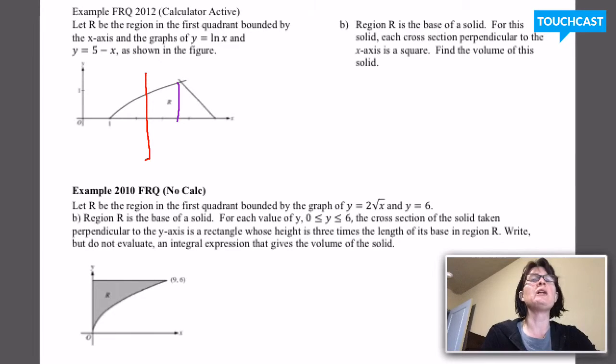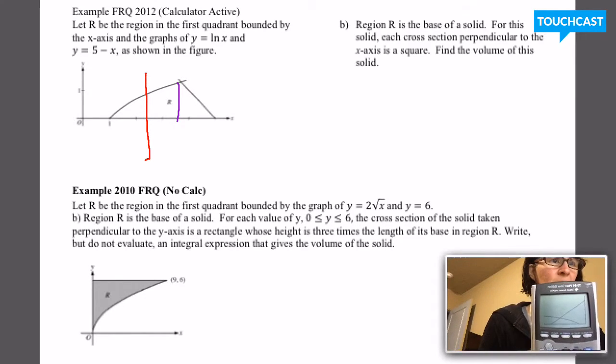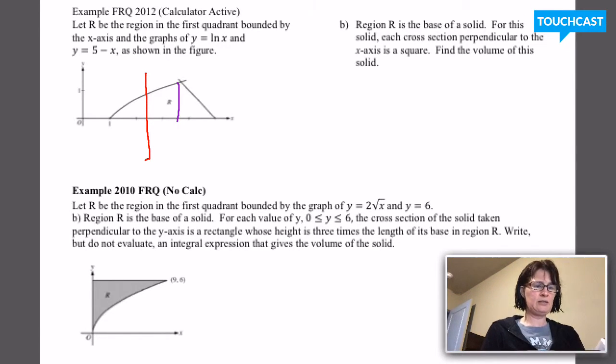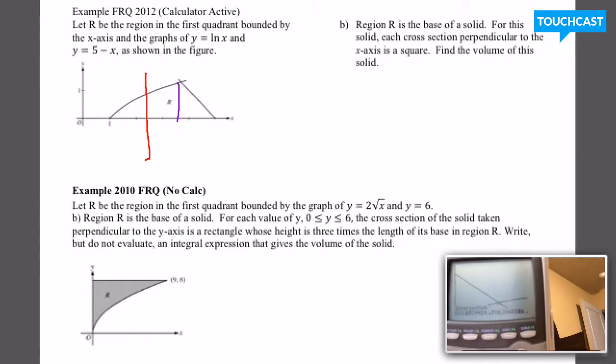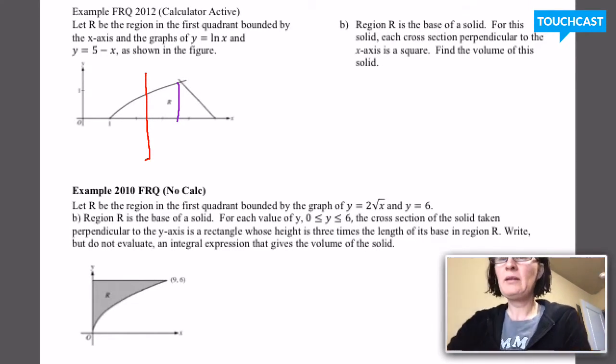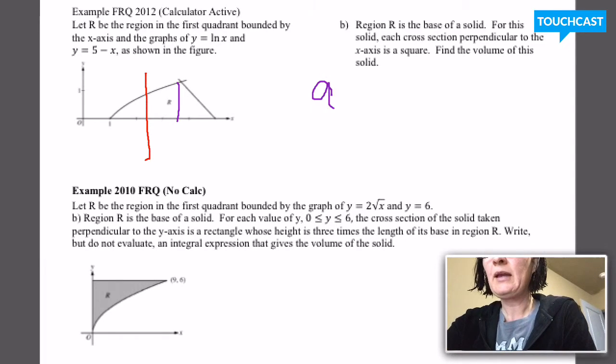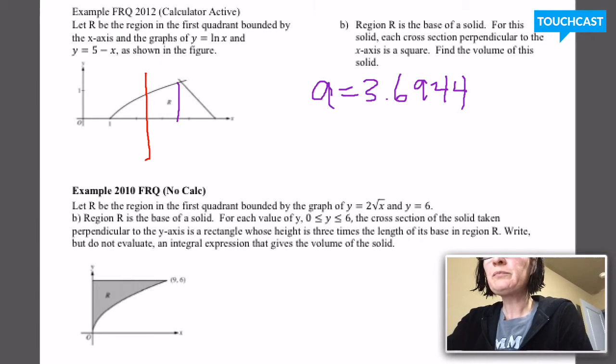So recall that our first step was to graph the function Y equals natural log of X, graph the function Y equals 5 minus X. Can you see this that I did that here? And we're going to look for this intersection point. So we did that. We found out that the curves intersect when X is equal to 3.6944. So I'm going to write that number down. I'm going to call it little a, just to give it something, just to call it something. a is 3.6944.